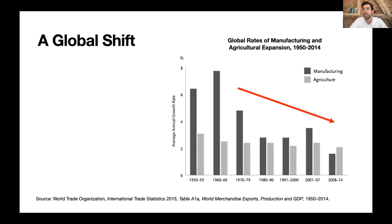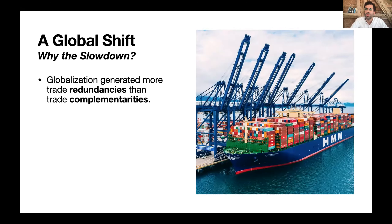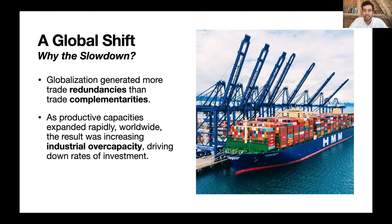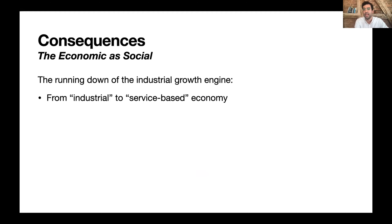Output growth rates for industry in real terms have been stagnating across the entire world since the 1960s and 70s. My argument is that globalization generated more trade redundancies than trade complementarities: as productive capacities expanded rapidly worldwide, the result was industrial overcapacity, driving down rates of investment and hence output growth in industry. That's the cause of deindustrialization.